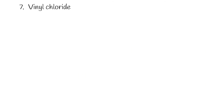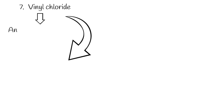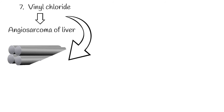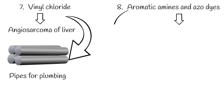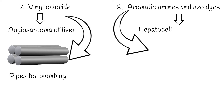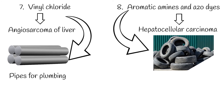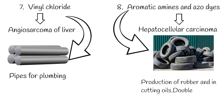7. Vinyl chloride causes angiosarcoma of the liver. It is used to produce pipes for plumbing. 8. Aromatic amines and azo dyes cause hepatocellular carcinoma. They are used for production of rubber and in cutting oils.